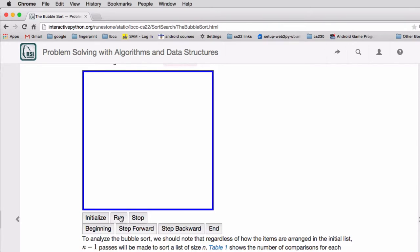What they do in the book is they give you a little initialization. This shows you some random data and you're going to see it working. It's going to be comparing and you'll see the biggest item move all the way to the right as it runs. That's one pass of the loop.